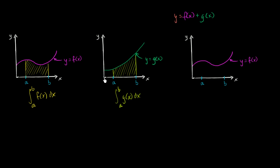When x is zero, g of x looks like it's about that length, so I'm going to add that length here — I'd probably be right around there. At x equals a, it's a little bit more, and my f of x curve has increased, but if I add the g of x there, it gets me right about there. I'm just eyeballing it, trying to get an approximation and give you an intuition for what f of x plus g of x is.